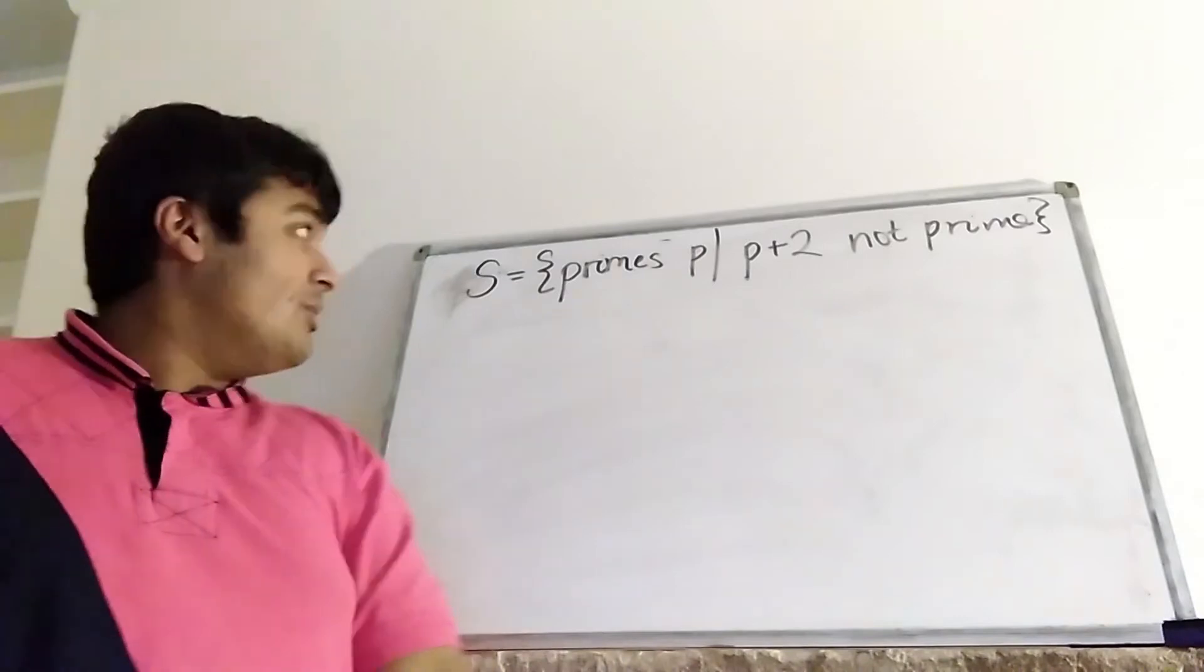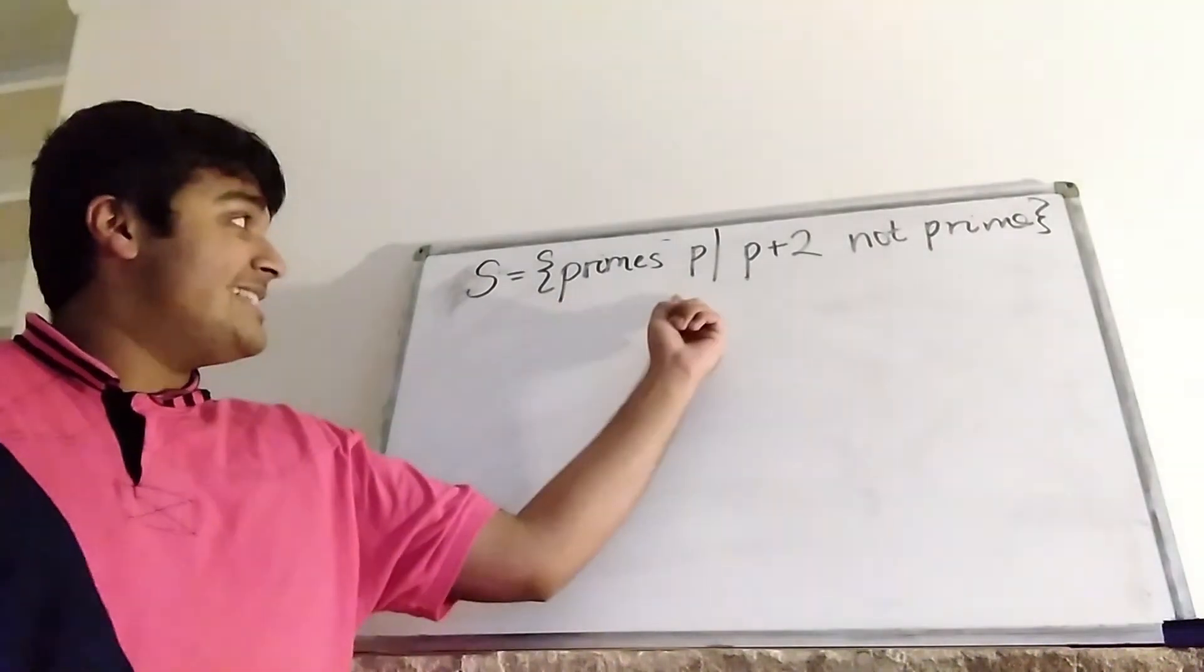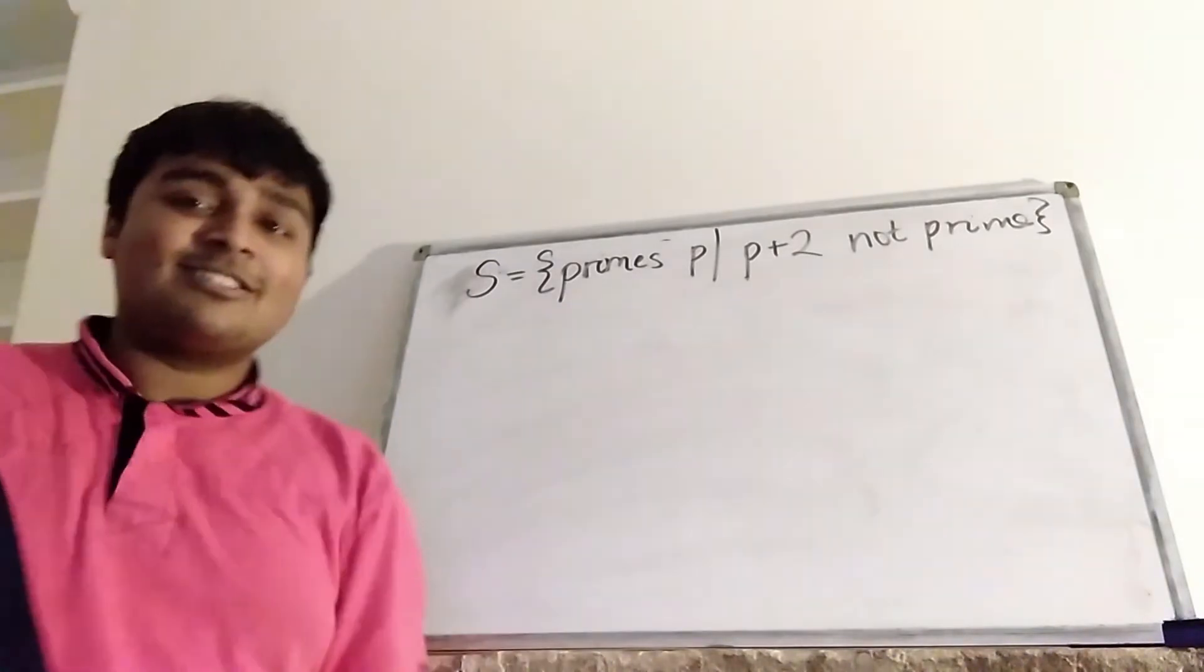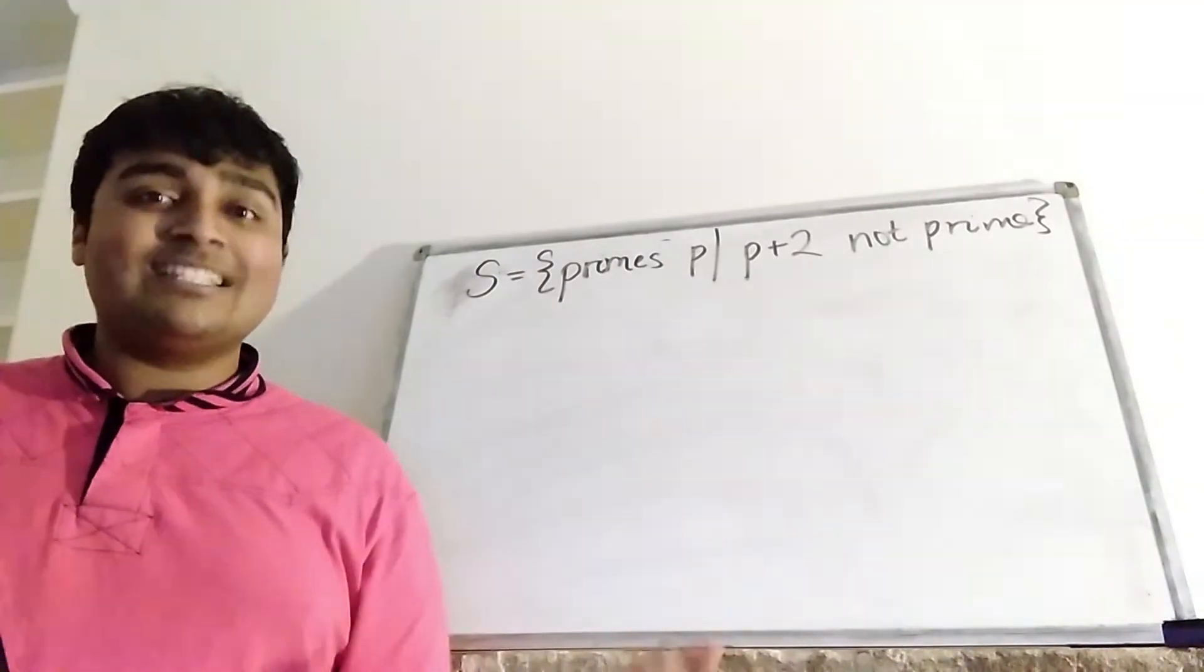Okay, firstly, this set is non-empty. Well, why is it non-empty? Well, we can say the number 7 is in this set, because certainly 7 is prime, and also 7 plus 2 is 9, which is not prime. 9 is 3 times 3. Okay, so 7 is in S, so in particular, S is non-empty.